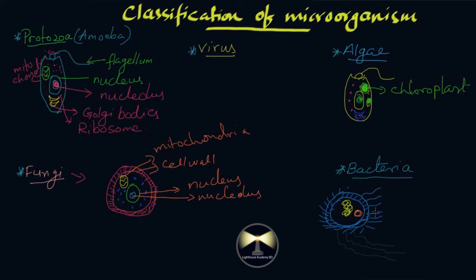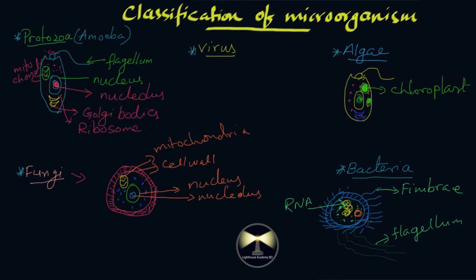Another important feature of bacteria is that they have a plasmid DNA. In upcoming videos on microorganisms we will discuss plasmid in detail — because of this plasmid, bacteria are used industrially for genetic modification. Bacteria also contain ribosomes. Let's label them: fimbriae, flagellum, RNA (ribonucleic acid), plasmid DNA, and ribosomes.